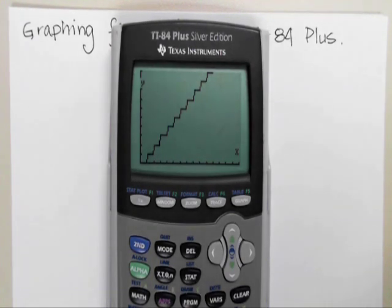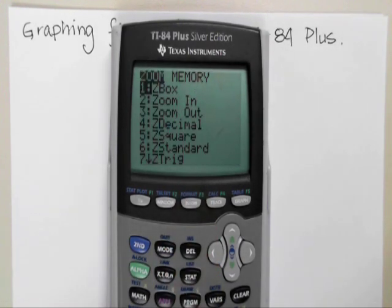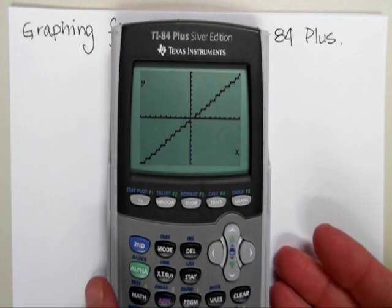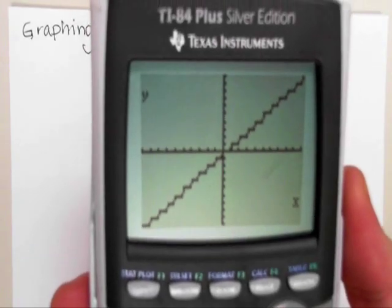There you see the step function in the first quadrant. We could zoom standard, so click number 6. Now you see it as a step function. Let me bring it closer so you can see it.